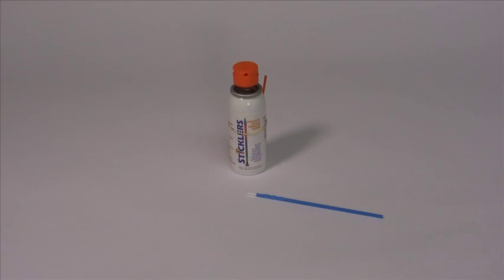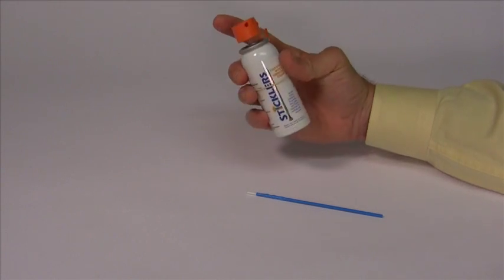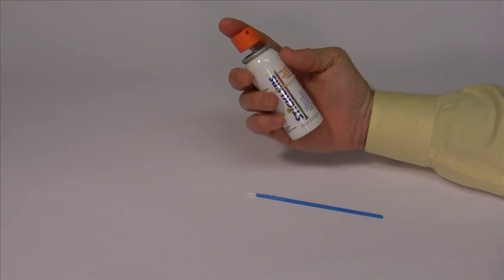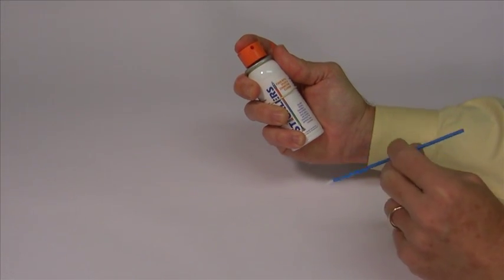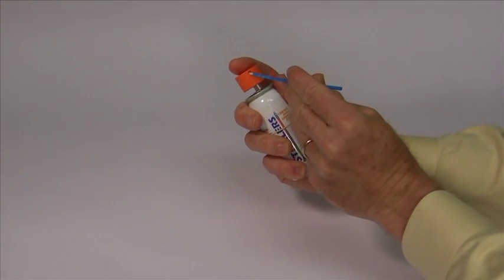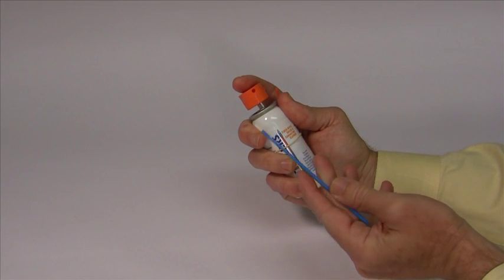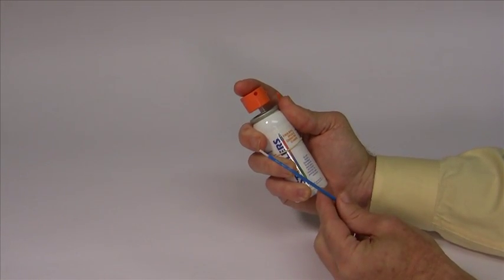The Triton dispenser has a unique well feature for wetting cleaning sticks with just the right amount of cleaning fluid. First, tilt the can back, gently press the Triton to fill the well with solvent, then dip the stick into the solvent. Remember, avoid oversaturating the stick—less is more.